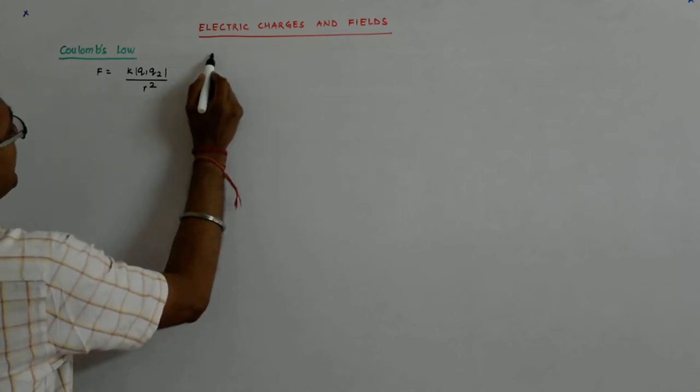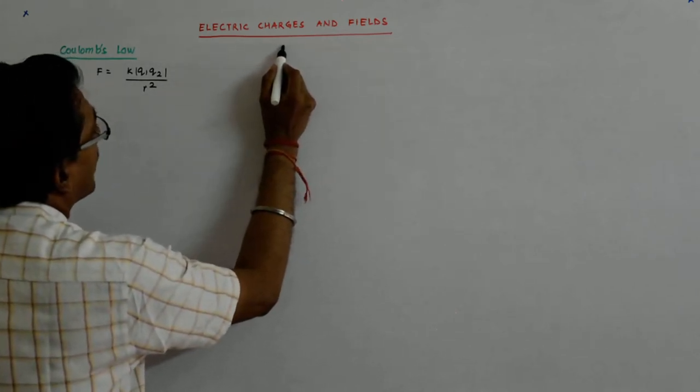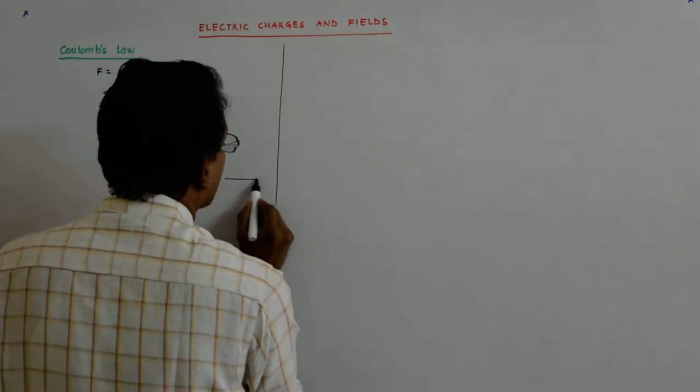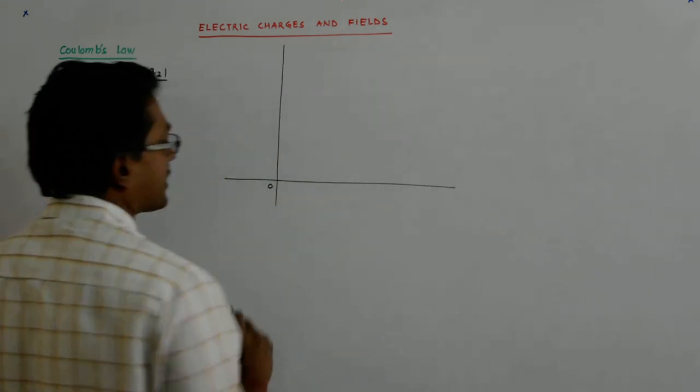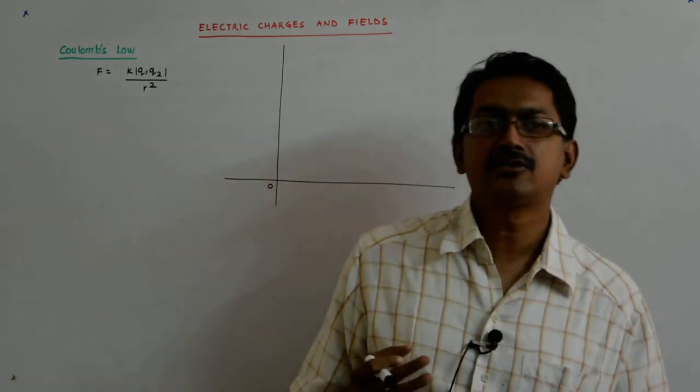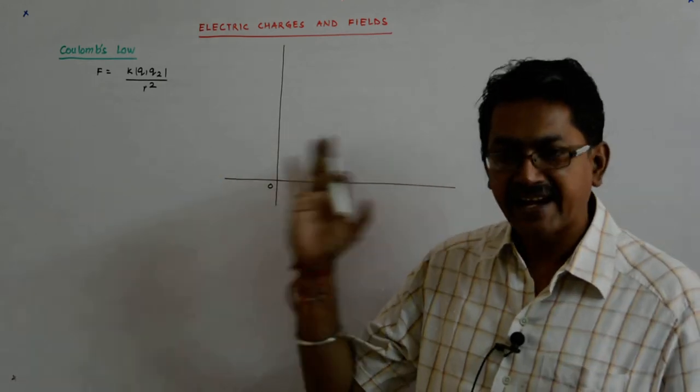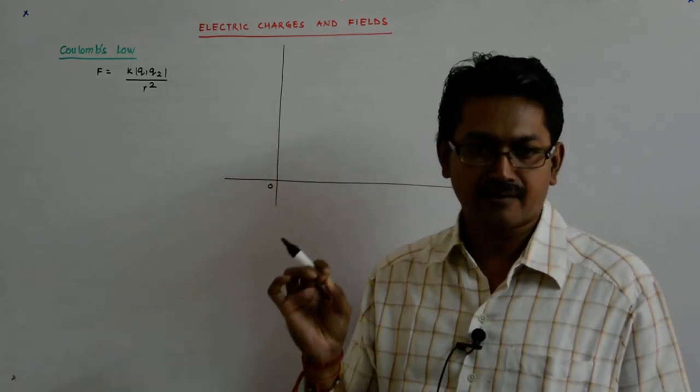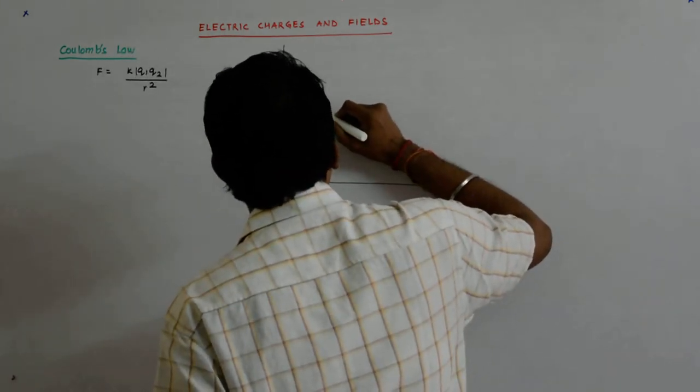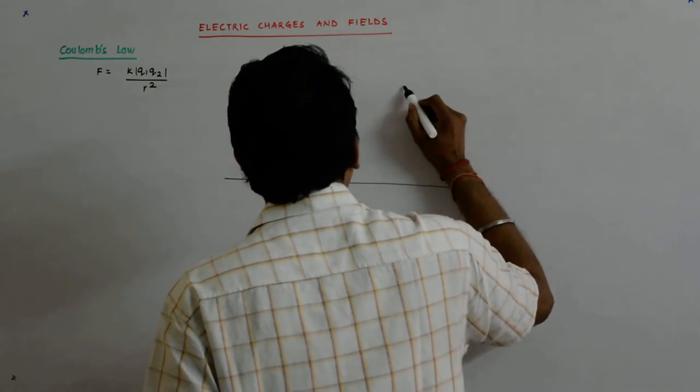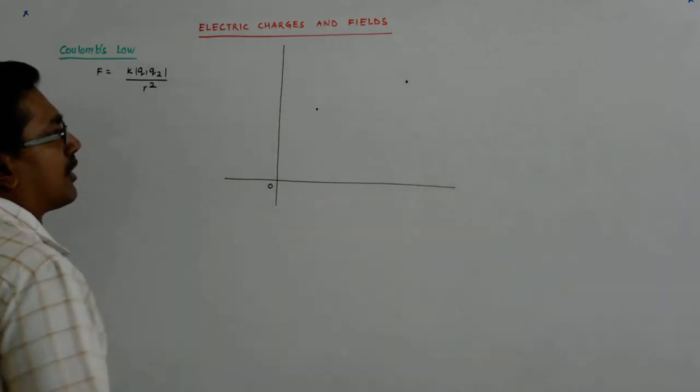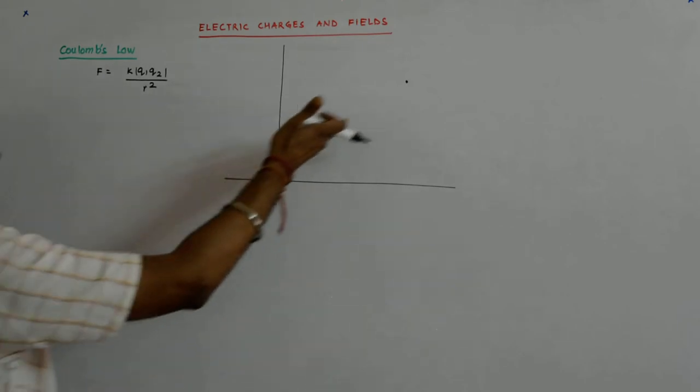We start with defining a Cartesian plane where this is my origin. We know that there are position vectors whose tail is at the origin and whose head is at the point of interest, wherever you are trying to point it out. So let us say I have a point here and say another point absolutely randomly located, no need that it is horizontal or whatever.